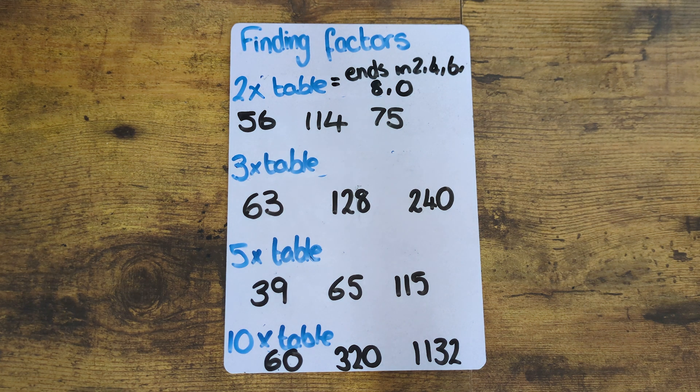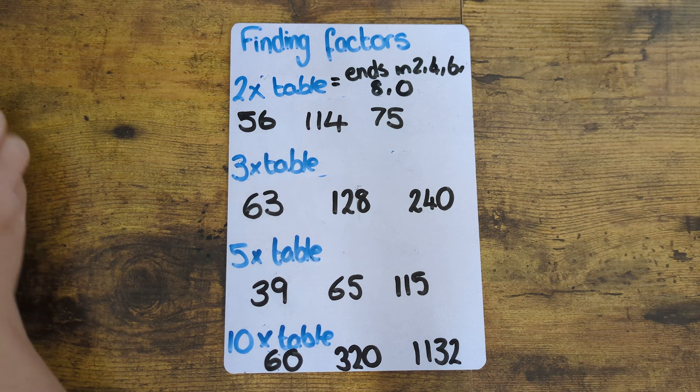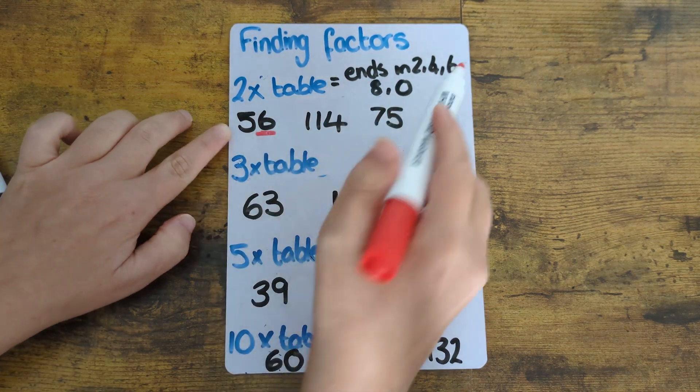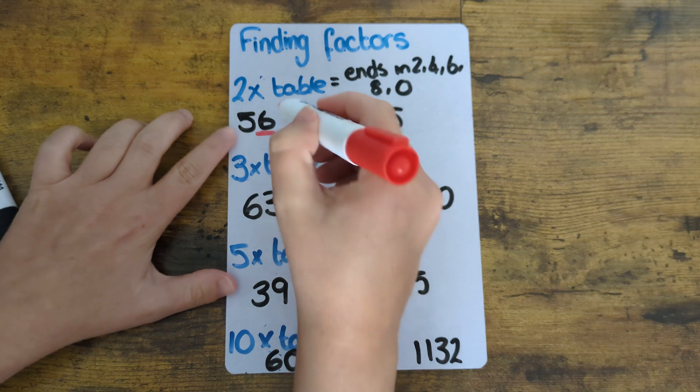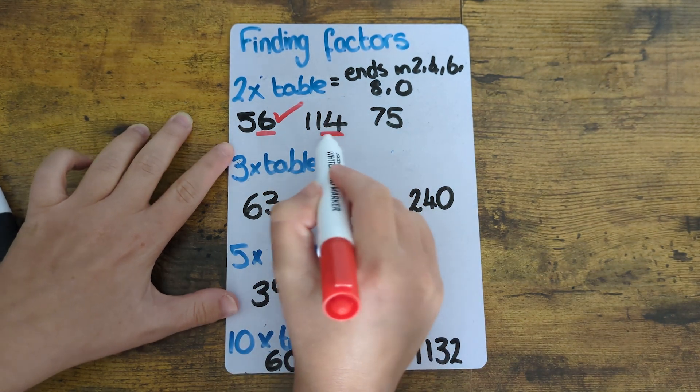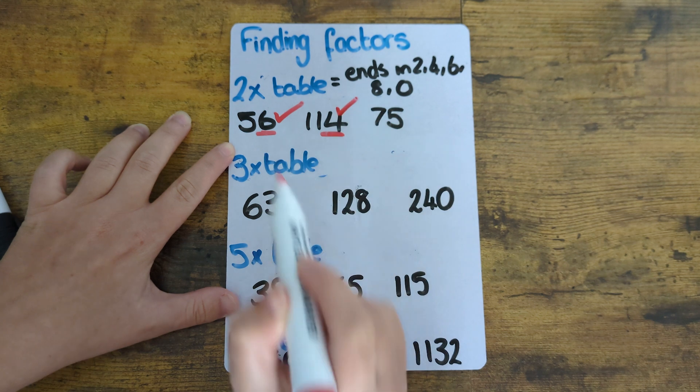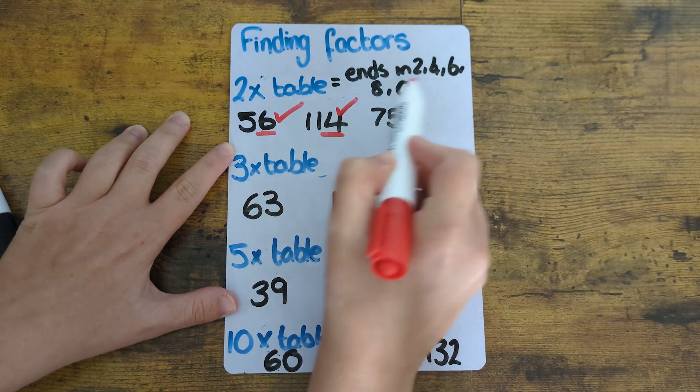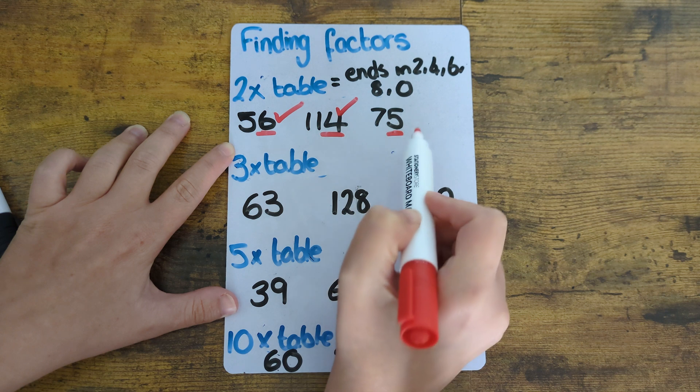So looking at these numbers the first number we've got here is 56. So 56 ends in a six, six is an even number so therefore 56 will be in the two times table. 114, four is an even number so that will be in the two times table. 75, five is not an even number and therefore it won't be in the two times table.